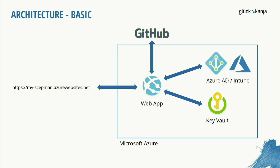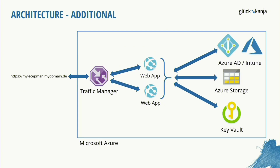To access SCEPman we get a default URL from the azurewebsites.net domain. We can also use a custom domain. For the high availability setup we use a custom domain like myscepman.mydomain.de. The Traffic Manager is our front-end entry point and points to one of the web apps. We can use web apps in different or the same locations, and all web apps communicate with an Azure Key Vault or Azure Storage for the artifacts.